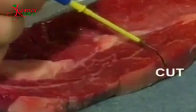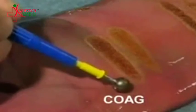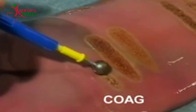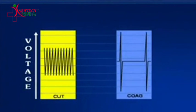A cautery pencil is used to cut and coagulate at the same time. The difference lies in the peak voltage and the frequency of the alternating current supplied through it.